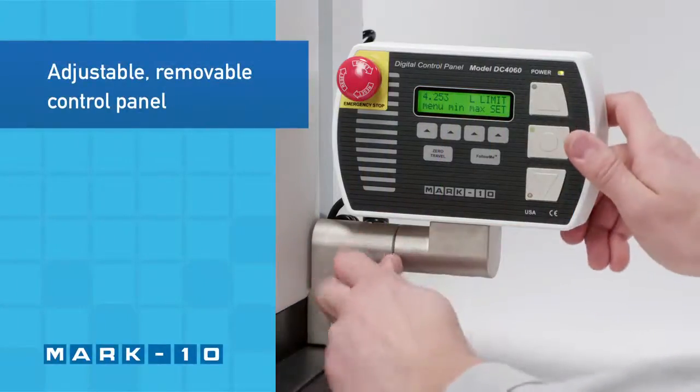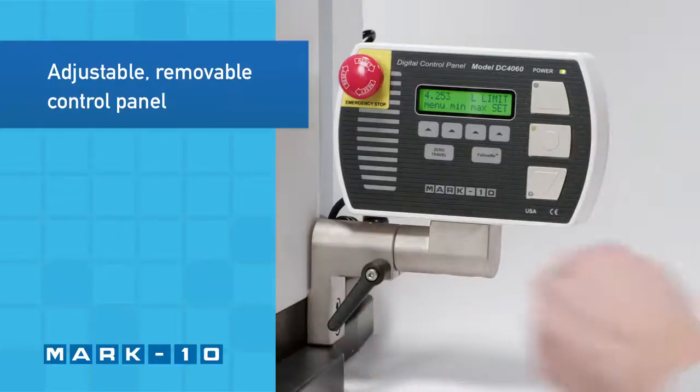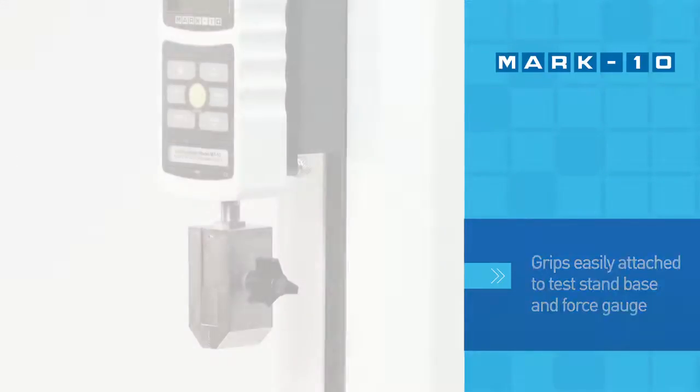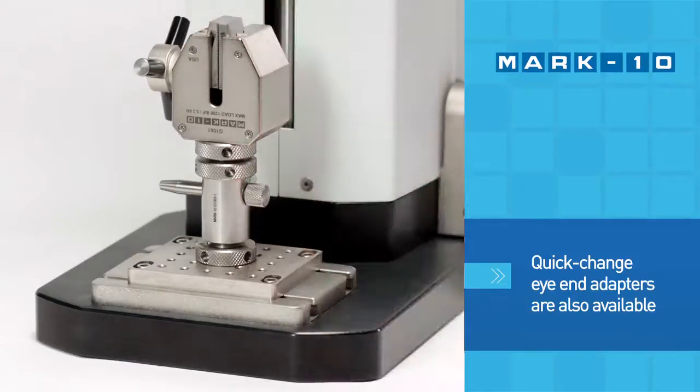Adjust the viewing angle of the control panel or remove it from the column for ergonomics or safety considerations. Grips can be fastened onto the test stand base and force gauge. Quick-change eye-end adapters are also available to accommodate certain grips and fixtures.